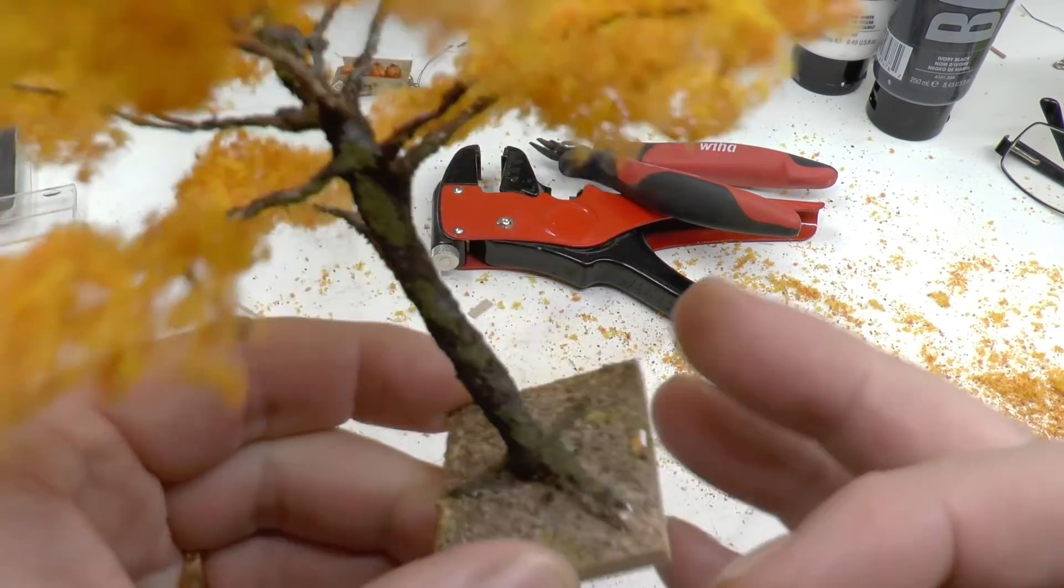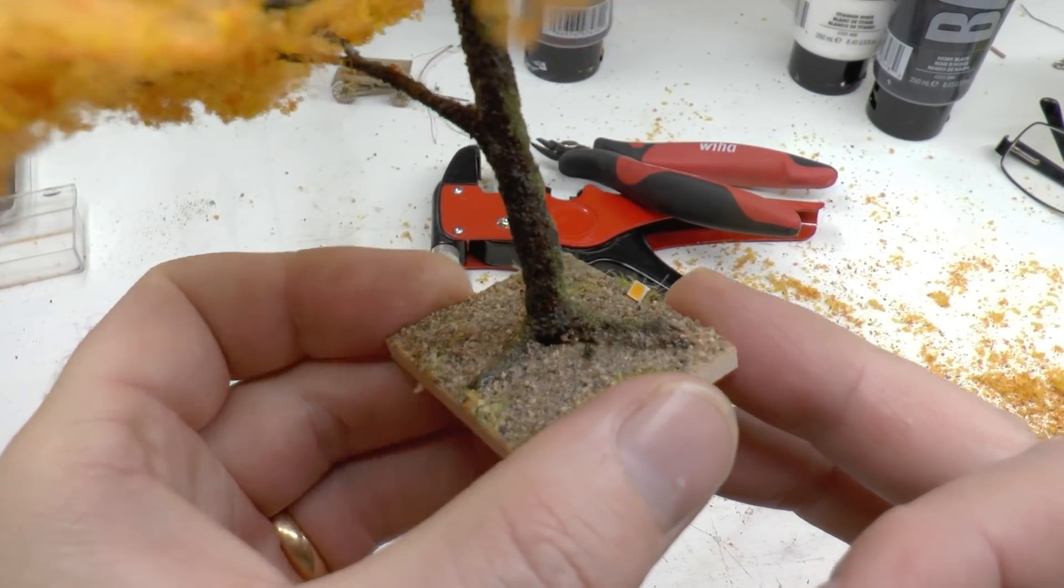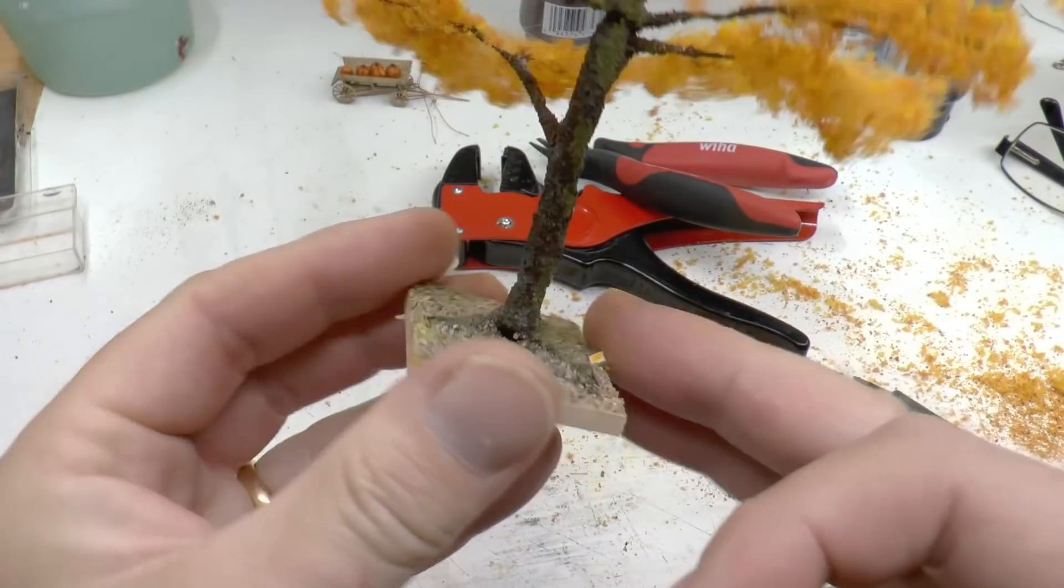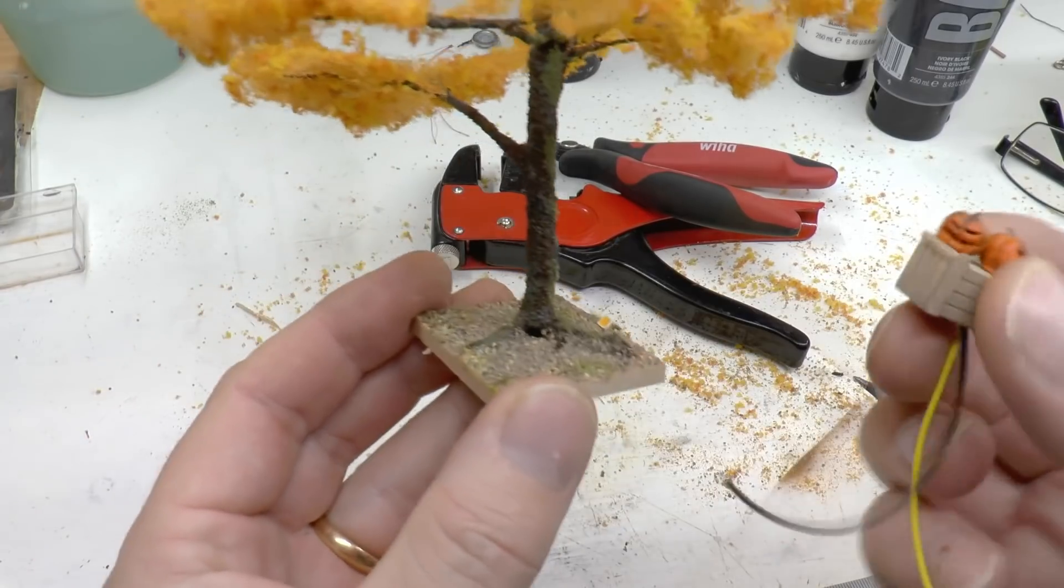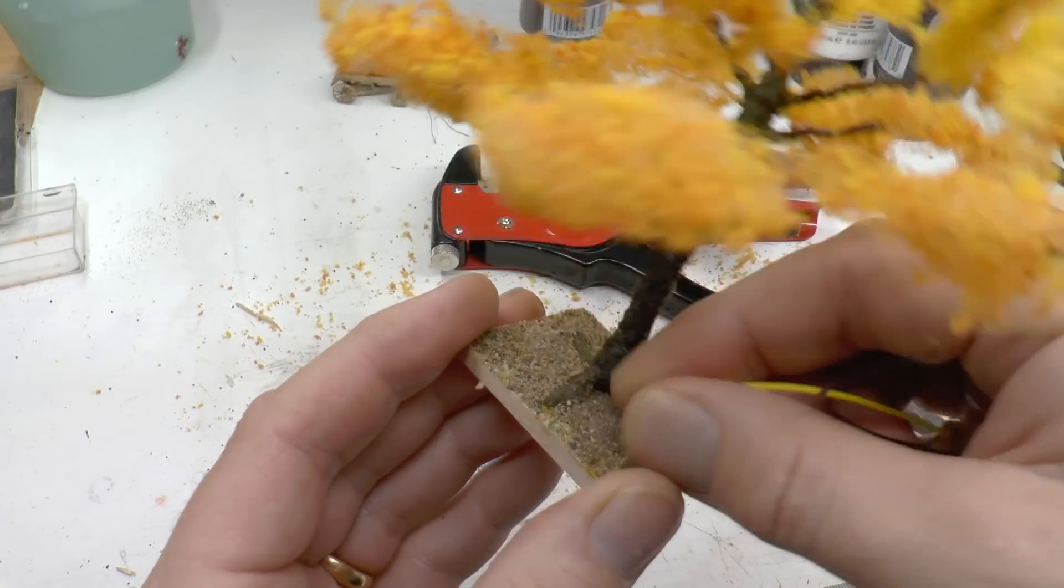Now I have fitted the tree onto a rectangular piece of hollow piece of wood. It's made up from balsa and plywood and I've sprinkled some sifted sand on the top around the root so it blends in nicely.